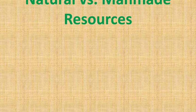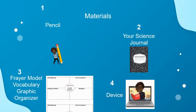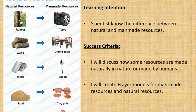Natural versus man-made resources. Materials you will need: your pencil, your science journal, and a Frayer model vocabulary graphic organizer found in the assignment on your electronic device. Learning intention: scientists know the difference between natural and man-made resources. Success criteria: I will discuss how some resources are made naturally in nature or made by humans, and I will create a Frayer model for man-made resources and natural resources.